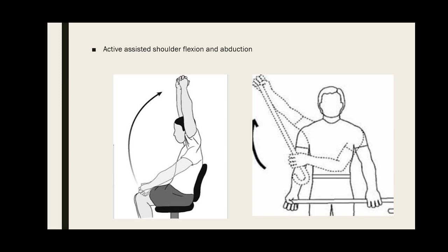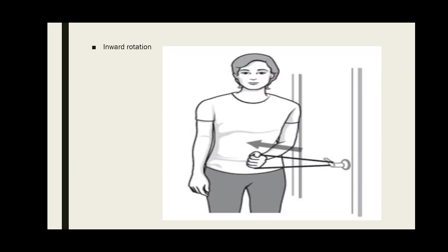Inward rotation: fix one end of the thera band on the door knob and stand next to it. With your affected hand, hold the thera band with elbow at 90-degree angle. Pull the band to midline and hold it for a few seconds. Relax and then repeat.